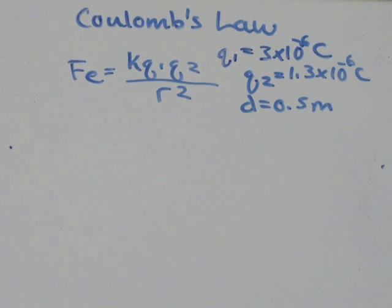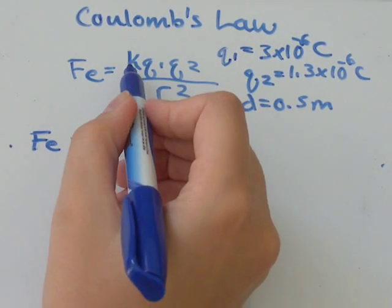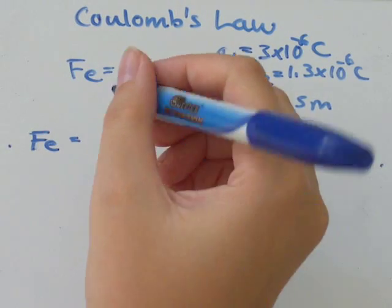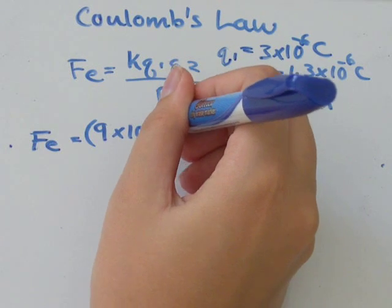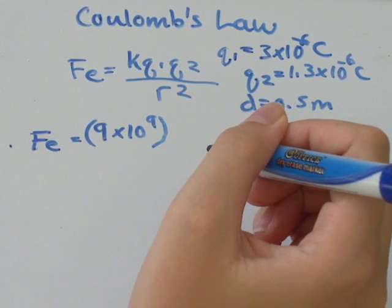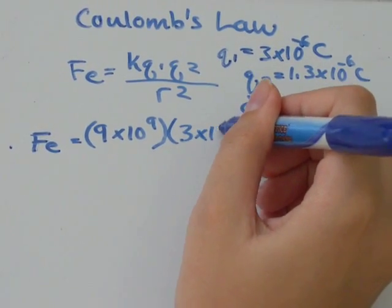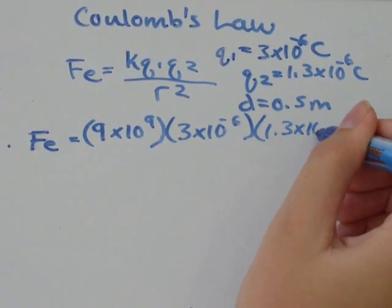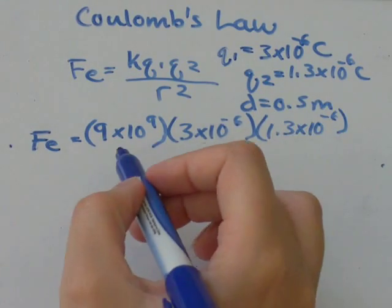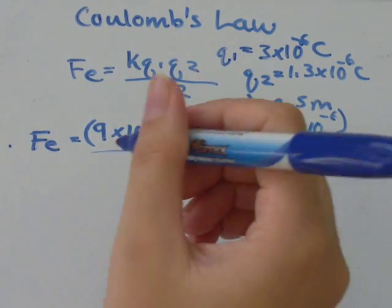So that's actually all the information we need to solve. We're asked for the electric force, so that's our unknown, and that's equal to K, which is just Coulomb's constant, always equal to 9 times 10 to the power of 9, and the unit on that is Newton times meters squared per Coulomb squared. So we'll multiply that by 3 times 10 to the negative 6 for Q1, Q2 is 1.3 times 10 to the negative 6, and all divided by the distance they are apart, which was 0.5, and then we have to square that.